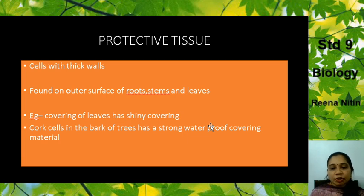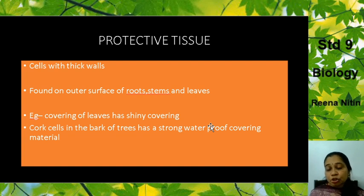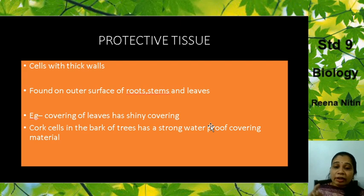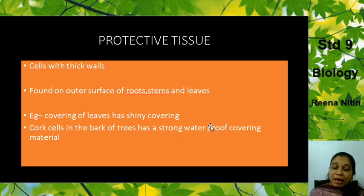First we will study the protective tissue. The cells have thick walls. As the name suggests, its function is protection, so obviously the walls should be thick. Where are they found? Since their function is protection they will be found on the surface — on the surface of roots, stems and leaves.